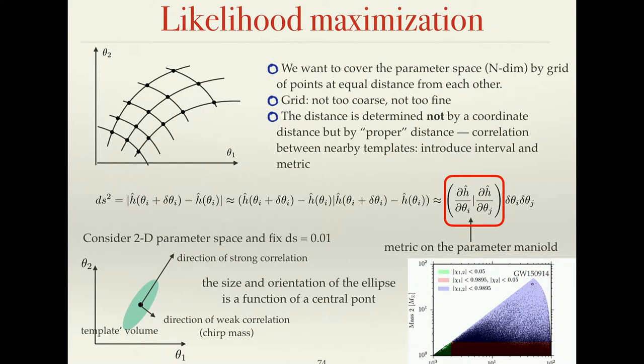To have a maximum likelihood estimator of the parameters, you want to maximize your likelihood. Usually you have many parameters, so it's a large parameter space. One of the easiest ways is to cover your parameter space with a grid — a mesh of points in N dimensions — where all points are at equal distance from each other.